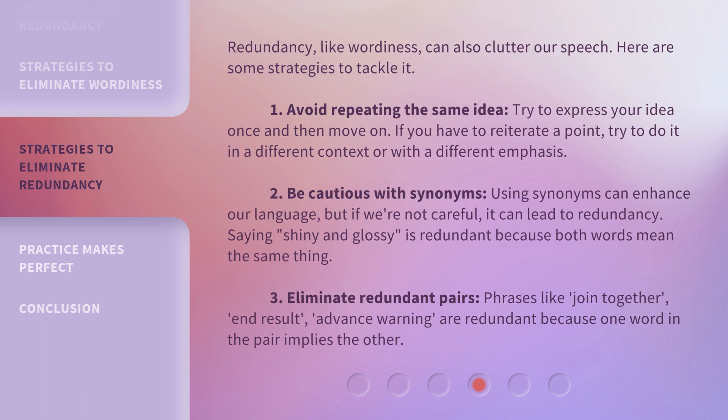Redundancy, like wordiness, can also clutter our speech. Here are some strategies to tackle it. First, avoid repeating the same idea. Try to express your idea once and then move on. If you have to reiterate a point, try to do it in a different context or with a different emphasis. Second, be cautious with synonyms. Using synonyms can enhance our language, but if we're not careful, it can lead to redundancy. Saying 'shiny and glossy' is redundant because both words mean the same thing. Third, eliminate redundant pairs. Phrases like 'join together,' 'end result,' and 'advance warning' are redundant because one word in the pair implies the other.